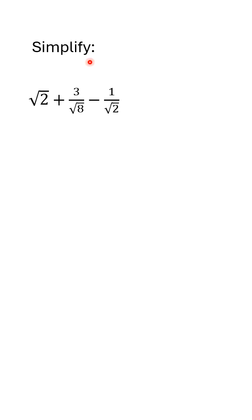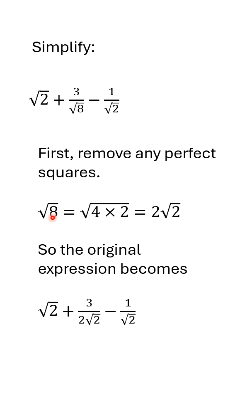The first thing I would do is approach this 8 and try to get rid of the perfect square. Well, 8 is 4 times 2, so the square root of 8 becomes the square root of 4 times 2, which is 2 times the square root of 2.